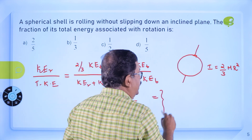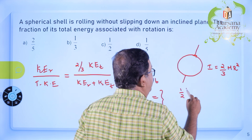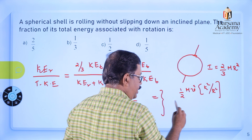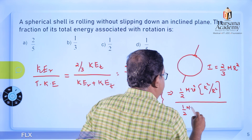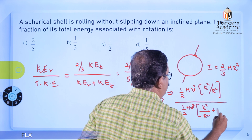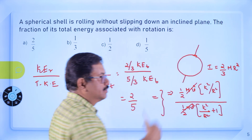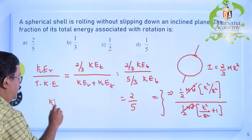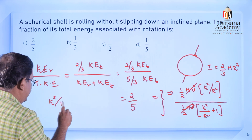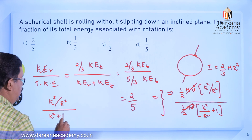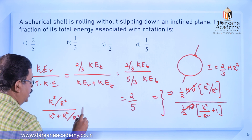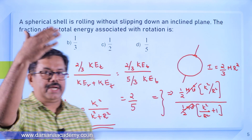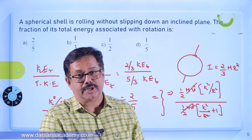The standard textbook formula for this is: KER = ½mv² × (K²/R²), where K is the radius of gyration. The fraction of rotational energy to total is (K²/R²) divided by (K²/R² + 1), which simplifies to K² divided by (K² + R²). You can use this formula for all different ratios — rotation to translation, rotation to total, and so on.